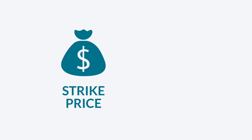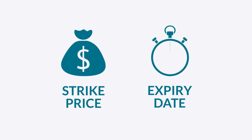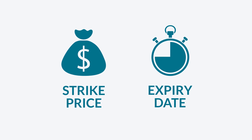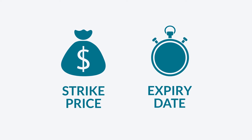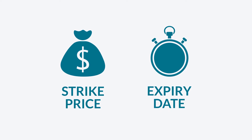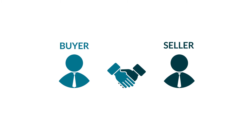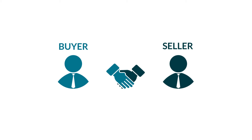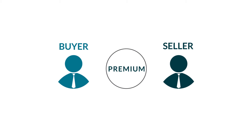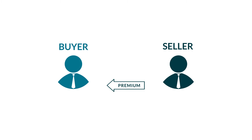Every option has a strike price and expiry date. The strike price is the price the underlying product can be bought or sold for. The expiry date is the latest day the options contract can be exercised. Having the option to buy or sell an underlying product at a predetermined price and date has a value. The value is called the premium. The risk for the buyer of the option is limited purely to the premium paid.